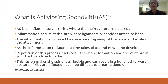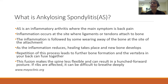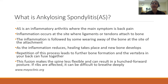Ankylosing spondylitis is an inflammatory arthritis where the main symptom is back pain. Inflammation occurs at the sites where ligaments or tendons attach to bone, followed by some wearing away of the bone at that site of attachment. As the inflammation resolves, healing takes place and new bone can develop. Repetition of this process leads to further bone formation, and the vertebrae in your back have the potential to fuse together. This fusion would make your spine less flexible, can result in a hunched forward posture, and if your ribs are affected, it can make breathing a little more difficult.